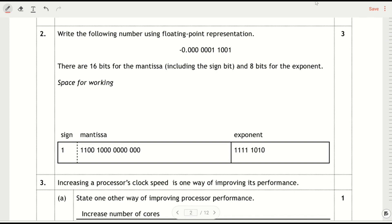So writing this number with floating point, really common 3 mark question. I've got the sign, the mantissa and the exponent and I've already written in the numbers. It says here there's 16 bits for the mantissa including the sign bit. What do we notice about this? There are 15 bits in here because the sign is taking up one of them. So just be careful that you've got 15 digits.